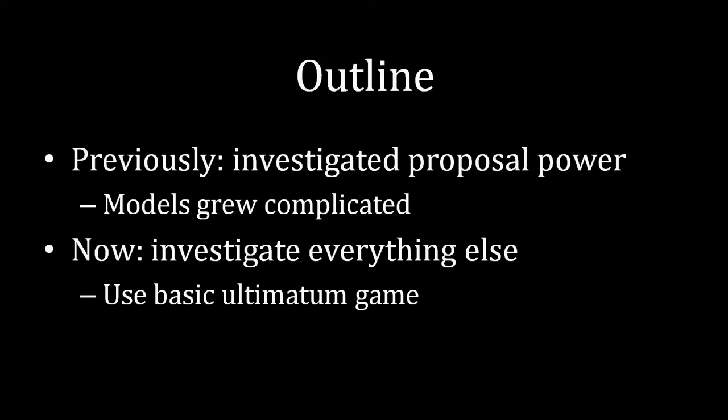Now that we're no longer interested in understanding why proposal power is a form of bargaining power, and we're interested in other sources of bargaining power, going forward in this course we don't actually need these really complicated models. As a result, from here forward, we're going to be focusing on models that are like the ultimatum game — this simple take-it-or-leave-it offer that Albert will propose to Barbara. We can find similar sources of bargaining power without spending a lot of time on analytically demanding games.